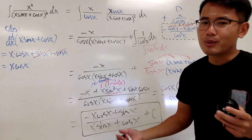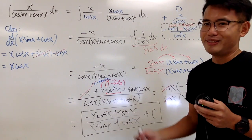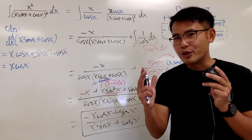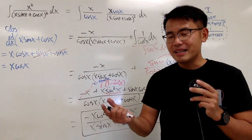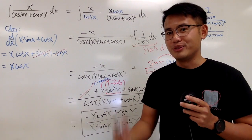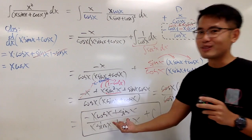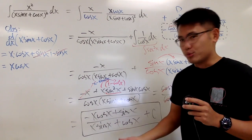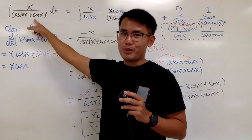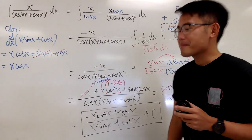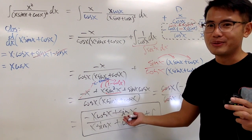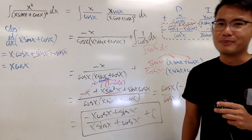Perhaps the question is: who came up with this problem in the first place? It's actually pretty easy — you just start with a quotient, differentiate it, and if you see a lot of simplifications, that makes the integral really hard. Do you guys think I should put this on my calculus 2 exam? Leave a comment down below.